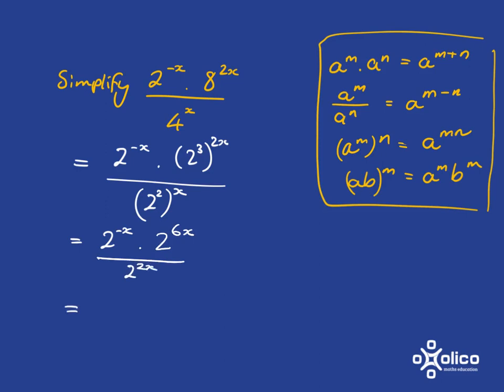Now we go ahead and we apply our rules. Here, when we're multiplying numbers, we know we add the exponents. So what we'll get is 2 to the negative x plus 6x. And then, when we divide by 2 to the 2x, we're just going to subtract the exponent. So we're going to subtract 2x.